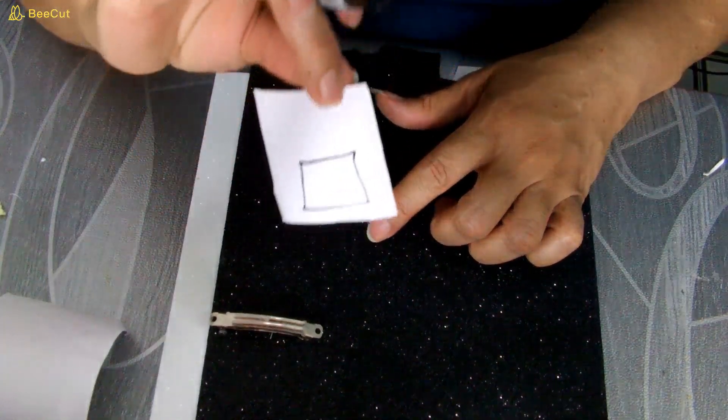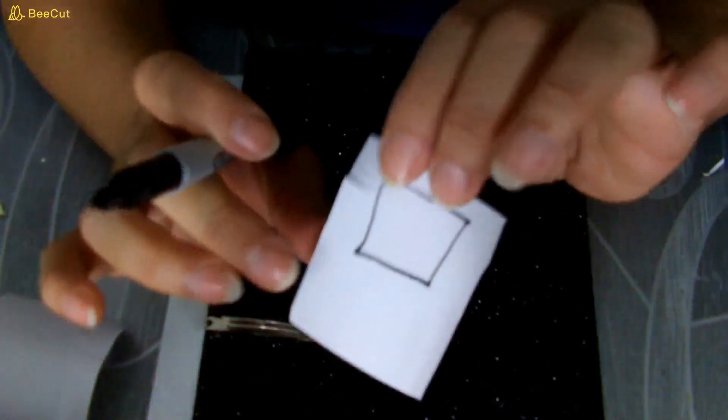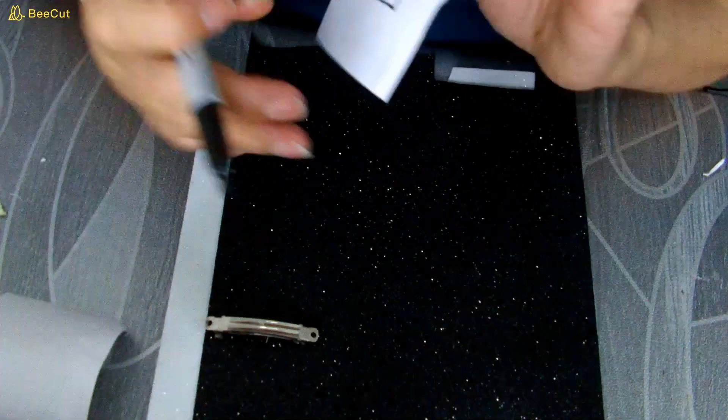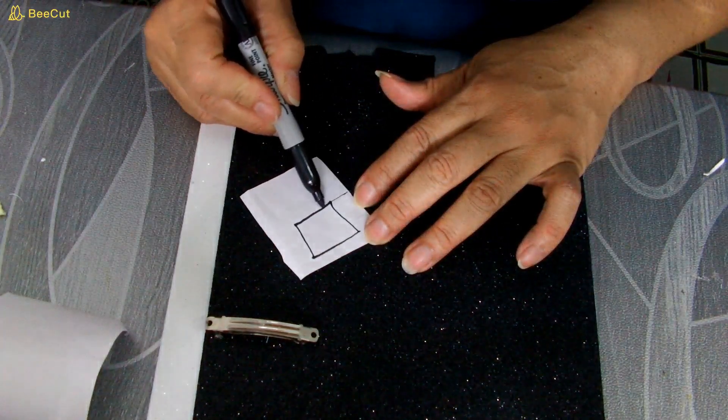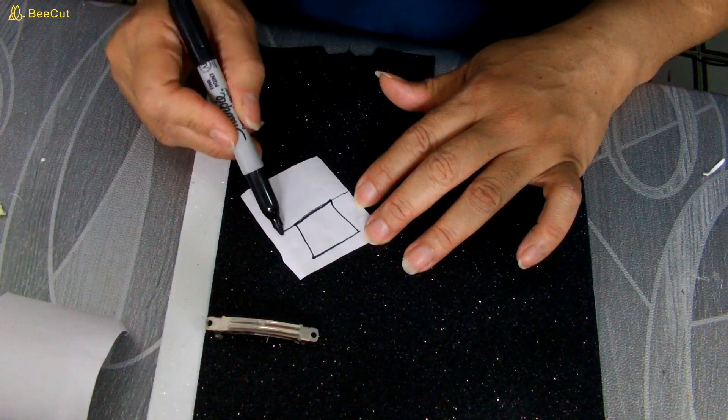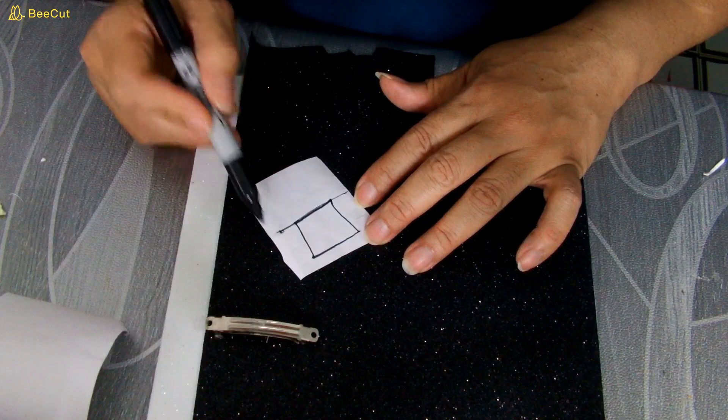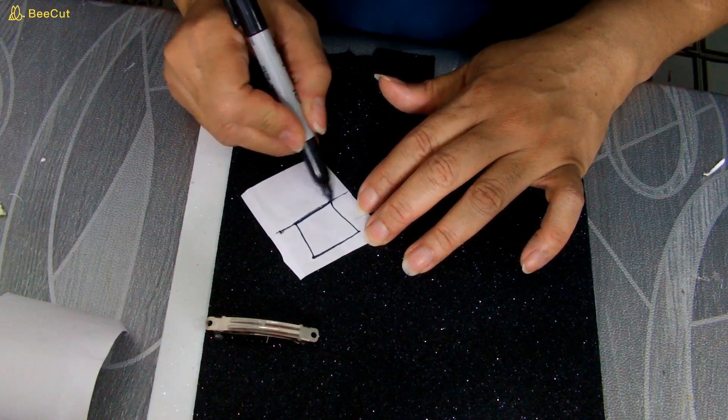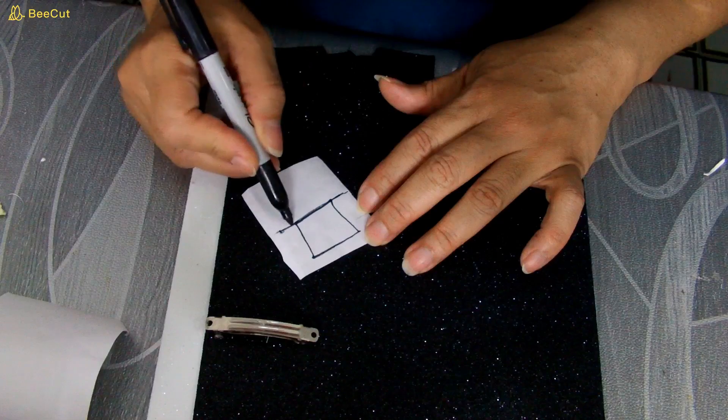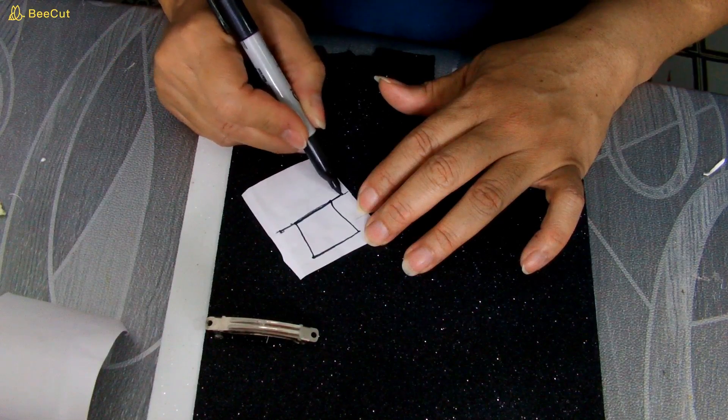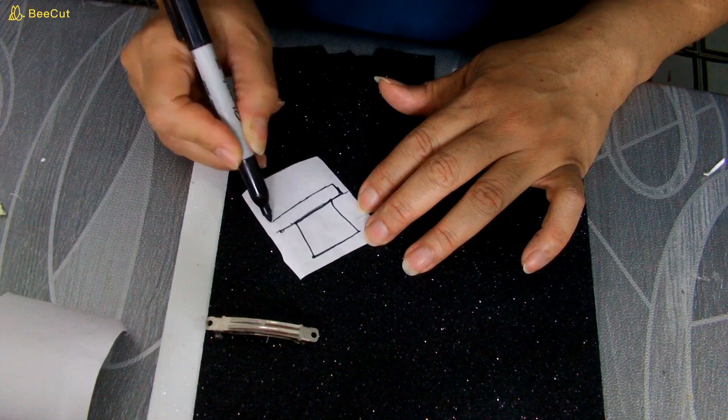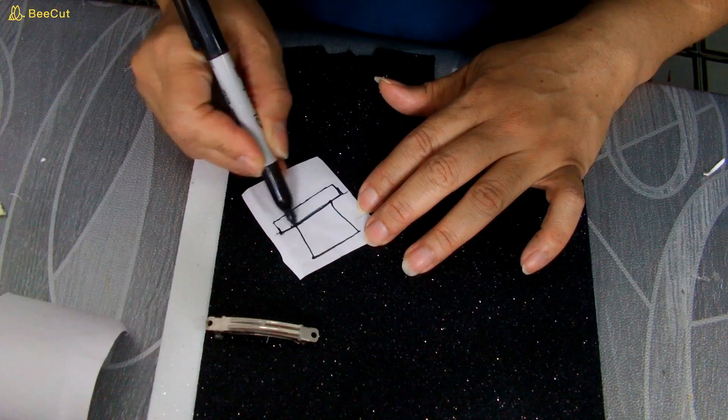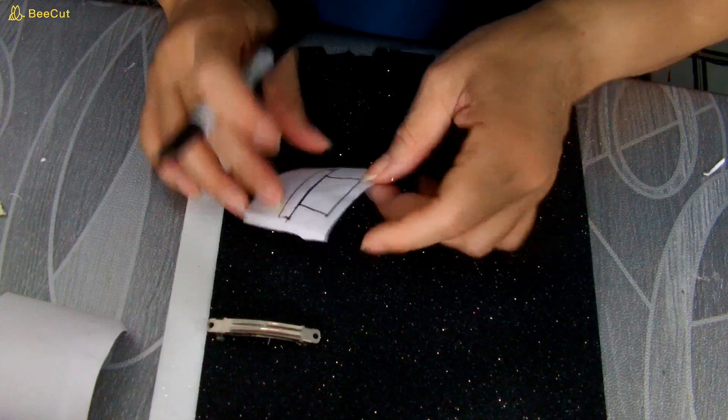Vamos a hacer un rectángulo así, ven, así. Y simplemente le vamos a hacer una raya así abajo, hasta el largo que usted quiera que llegue. Y vamos a hacer otro rectángulo pero más fino. Así. Y listo.